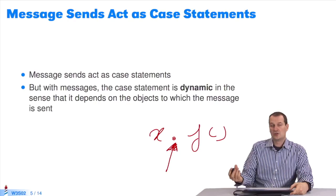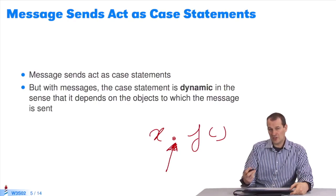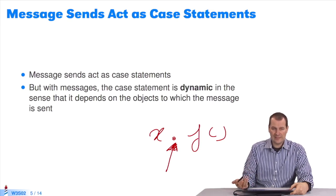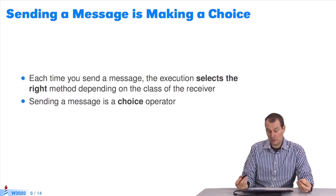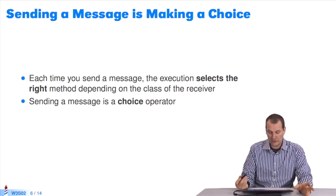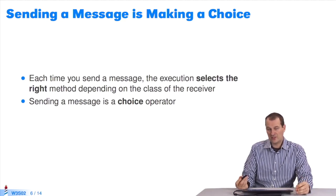To summarize, when you send a message, it really functions like a dynamic case statement, in the sense that it depends on the loaded classes. This Boolean example has two instances and two classes. Even with 50 of them, it'd work the same way. Whenever you send a message to the virtual machine, since Pharo has one like Java or C-sharp, the virtual machine's execution tool selects the right method depending on the receiver's class. So sending a message is a choice operator.